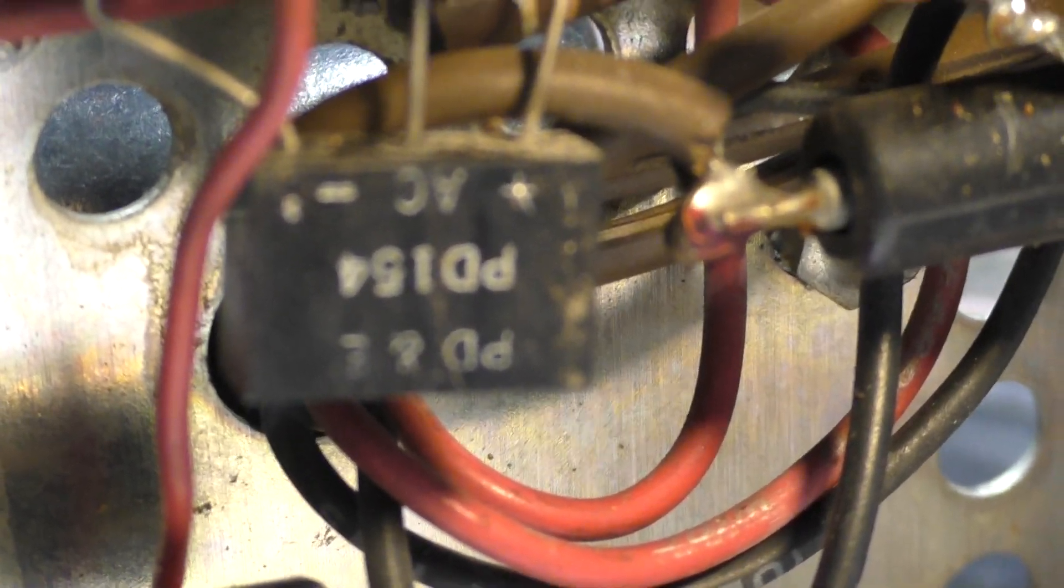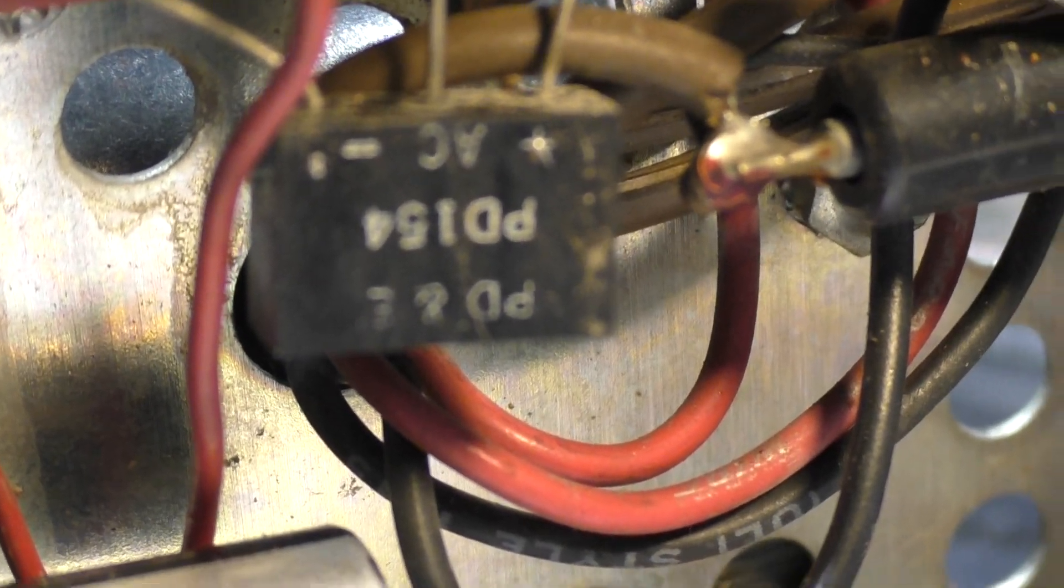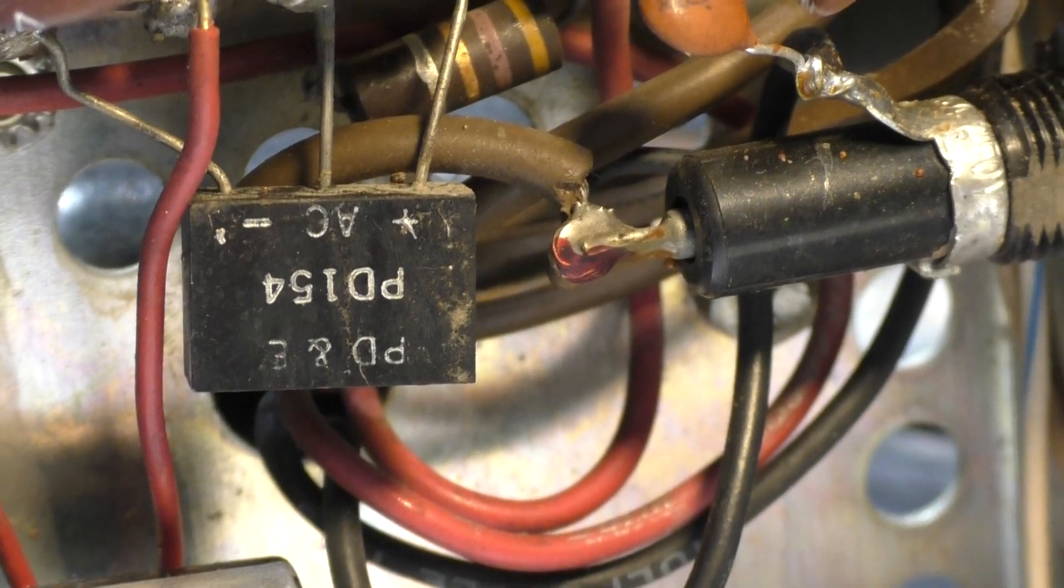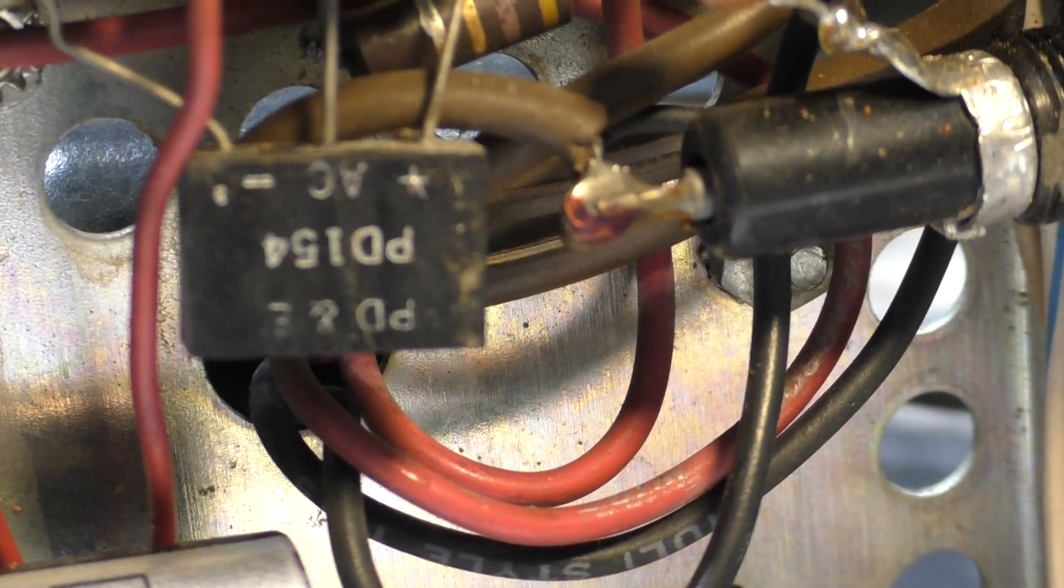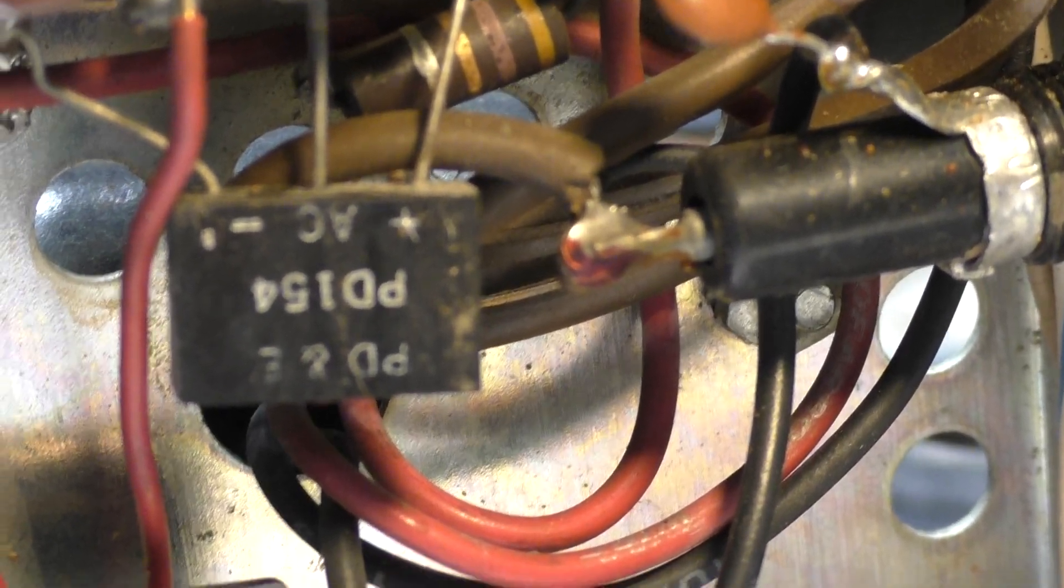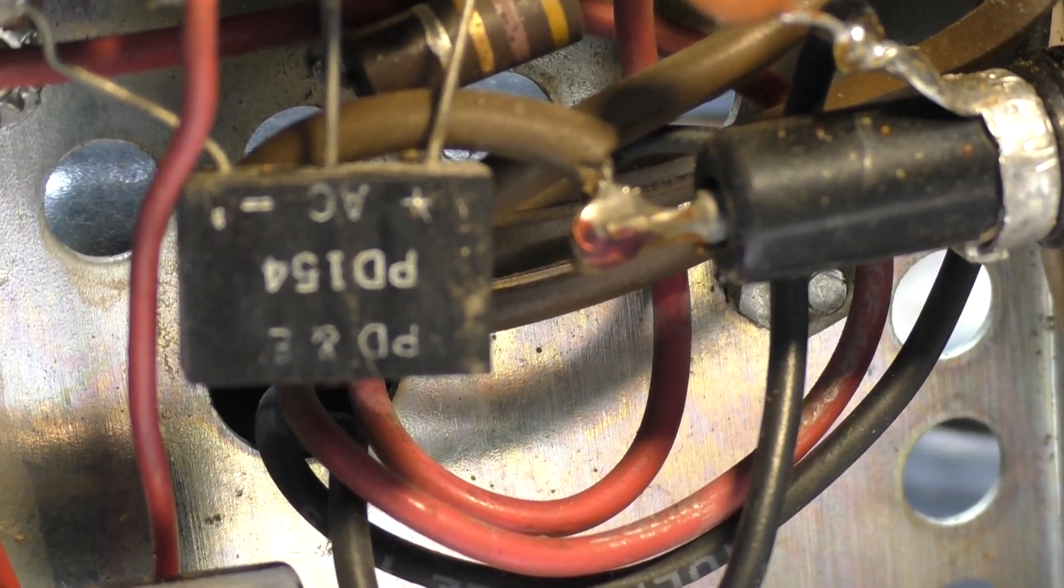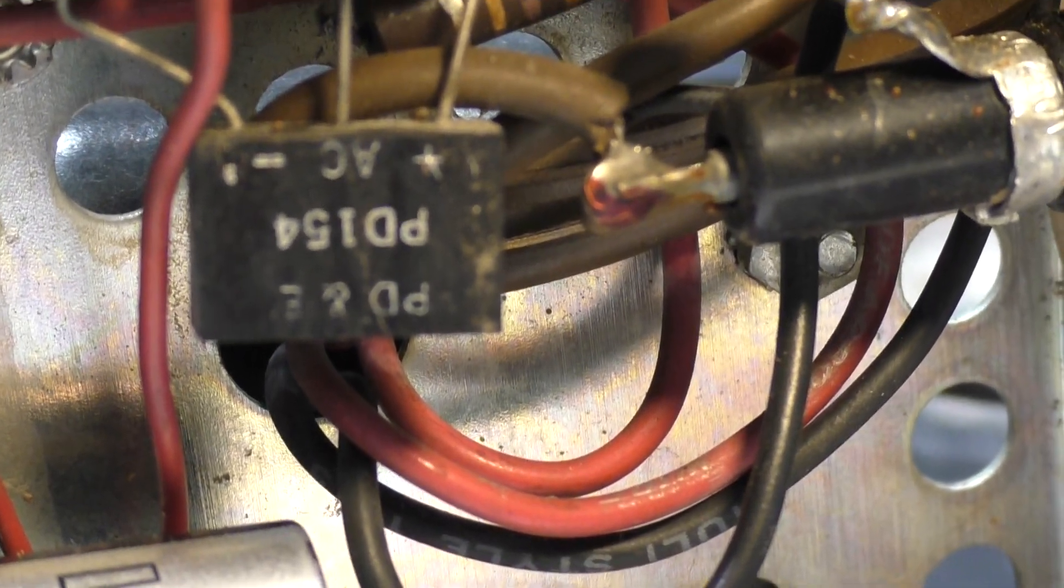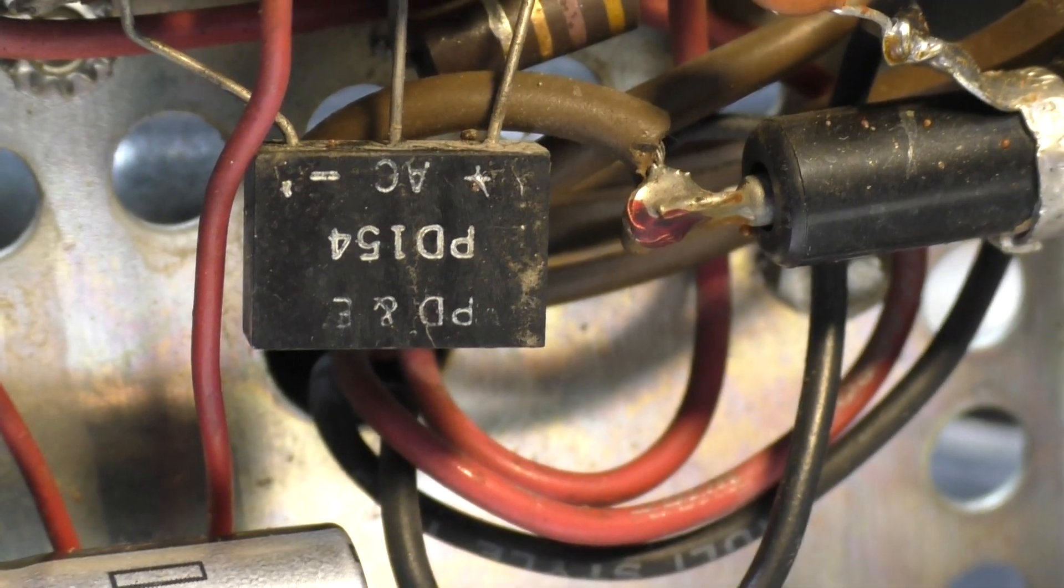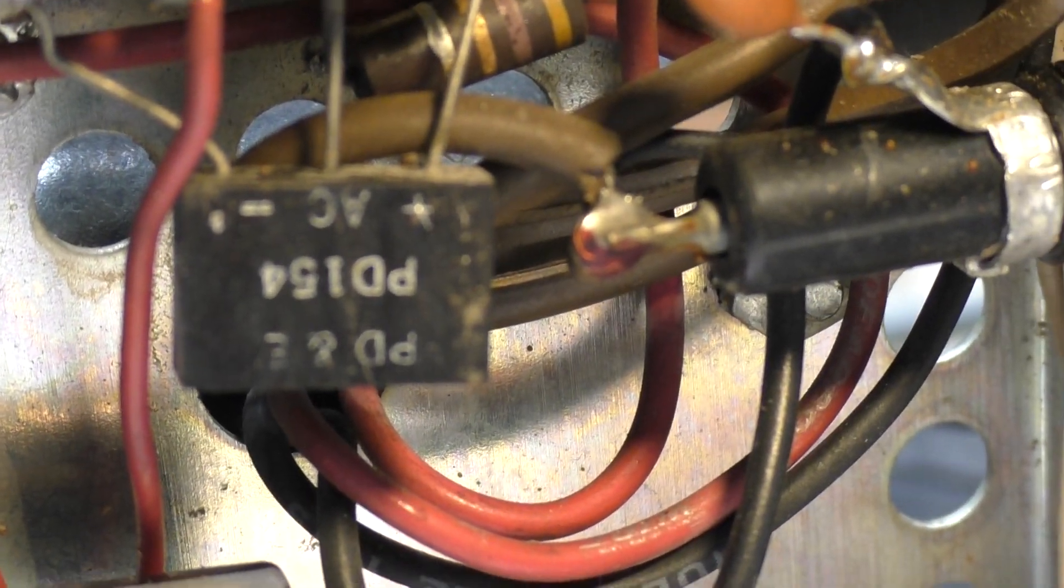If that goes bad, you can replace that with a couple of thousand volt, one amp or more diodes, which are like a nickel or a dime each now, and that will work even better than that old two diode unit. There's nothing special about it. It just puts two diodes in one case. That's all that PD 154 is. I think that's rated at about 500 volts at 500 milliamps or half an amp. If you put in some thousand volt, one amp or two amp diodes, you're doubling the amount of current and voltage that it can handle. I'd recommend just replacing that with two diodes.